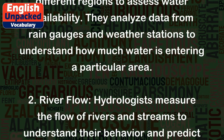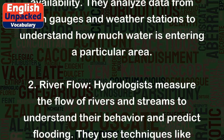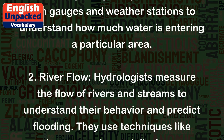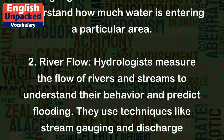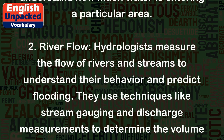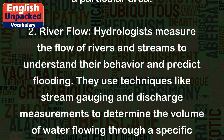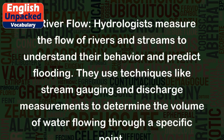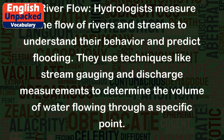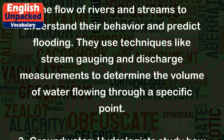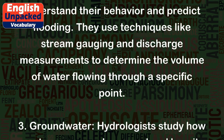Second, river flow: hydrologists measure the flow of rivers and streams to understand their behavior and predict flooding. They use techniques like stream gauging and discharge measurements to determine the volume of water flowing through a specific point.